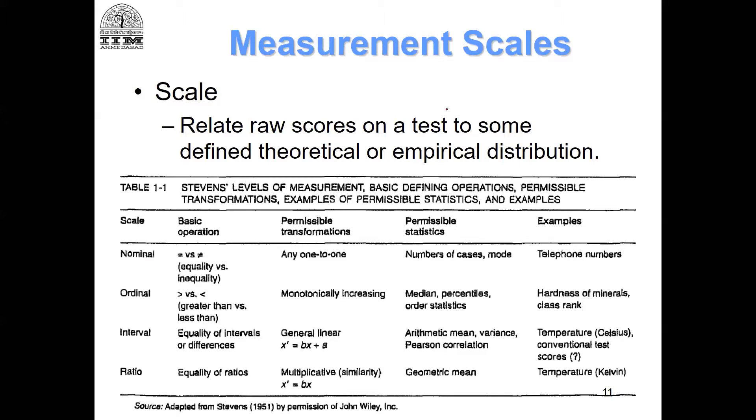When we look at nominal scale, it's when you can only categorize. There are some items in which only categorization is possible - you cannot do any particular operation. A good example of this would be gender.